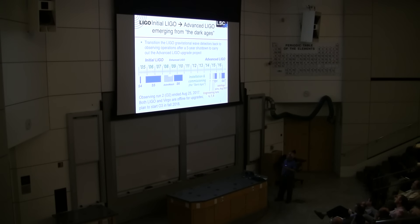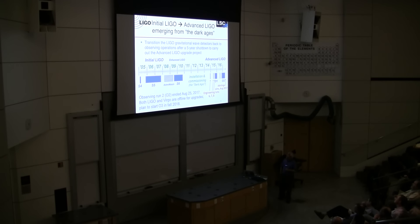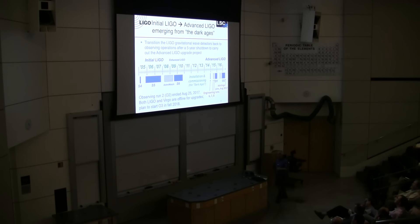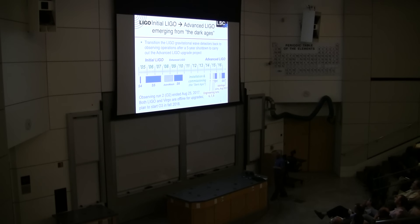For the first 10 years, in the 2000s, we operated the initial LIGO detectors. For 10 years we observed and detected nothing other than noise. That didn't dissuade us — we knew how to build a better detector. We spent five years building and installing the advanced LIGO detectors. We turned on in September of 2015, detected our first event a week or two after that, and have detected a bunch of events since then.